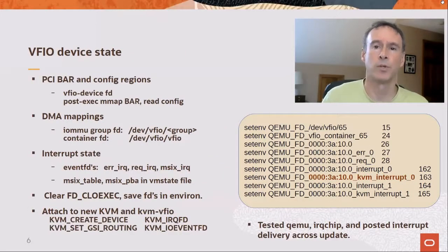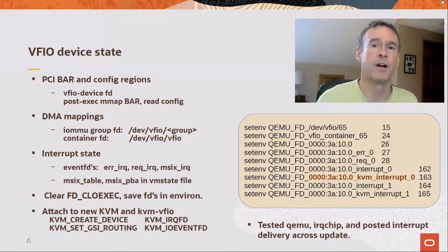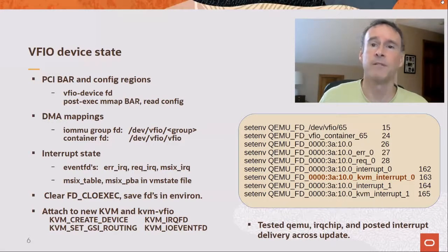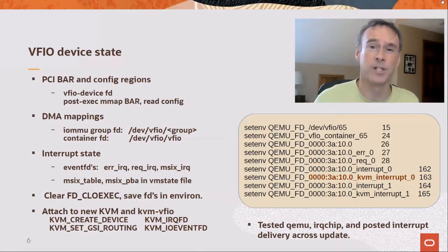To support VFIO devices, we preserve their descriptors across exec, which preserves the kernel state of the device. After exec, QEMU finds the descriptors and rebuilds the data structures that represent the device. The PCI BAR and config memory regions are accessible via the VFIO device FD. After exec, QEMU maps the BARs and rereads the config. The DMA mappings are kept alive by preserving the IOMMU group FD and the container FD. The interrupt state is captured by the event FDs and the MSIX data. Event FDs are created and preserved for the error and request IRQs and an MSIX IRQ per vector. The MSIX table and pending bit are saved to and restored from the VM state file. The values of the descriptors are saved in the environment. The box on the right shows all the FDs saved for one VFIO device.